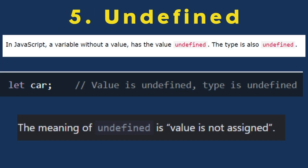Undefined is defined in JavaScript: a variable without a value has the value undefined. The type is also undefined, and we can still use the data type.